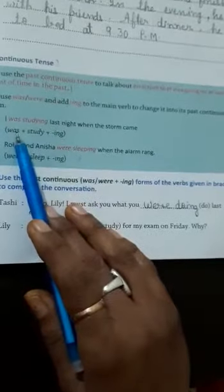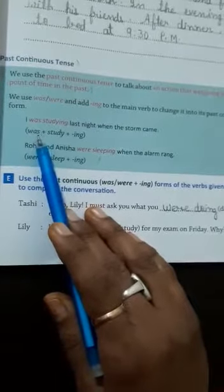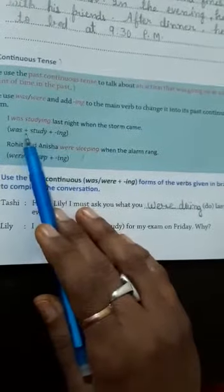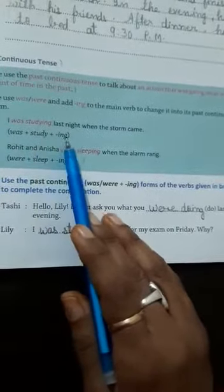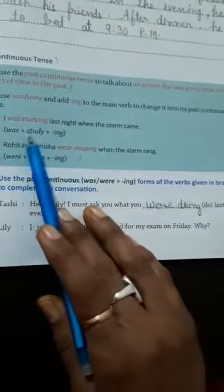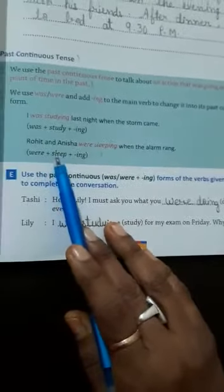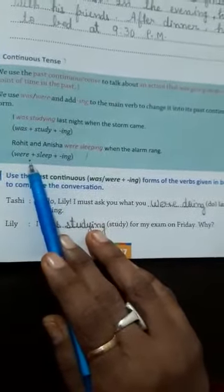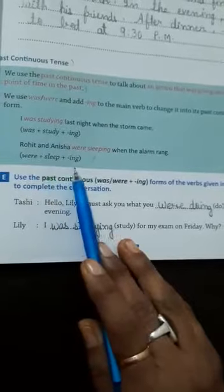When subject is singular, you will use was plus verb and add -ing. If subject is plural, you will use were. In past tense, use were plus verb and add -ing.